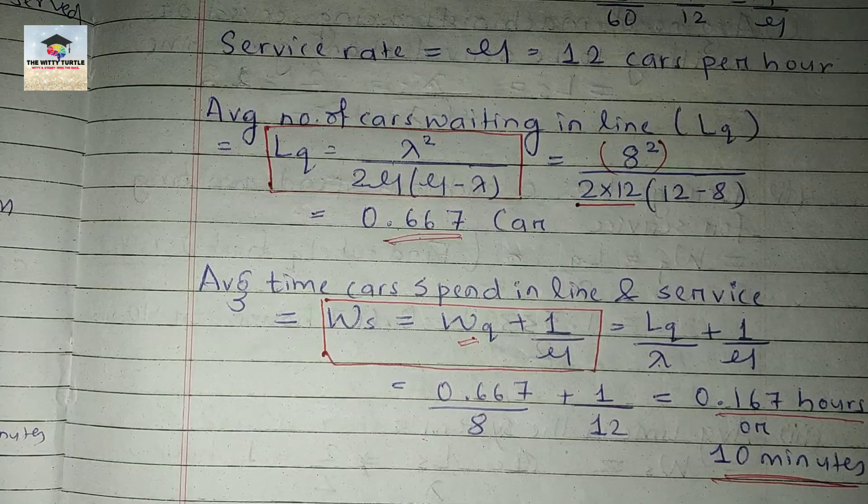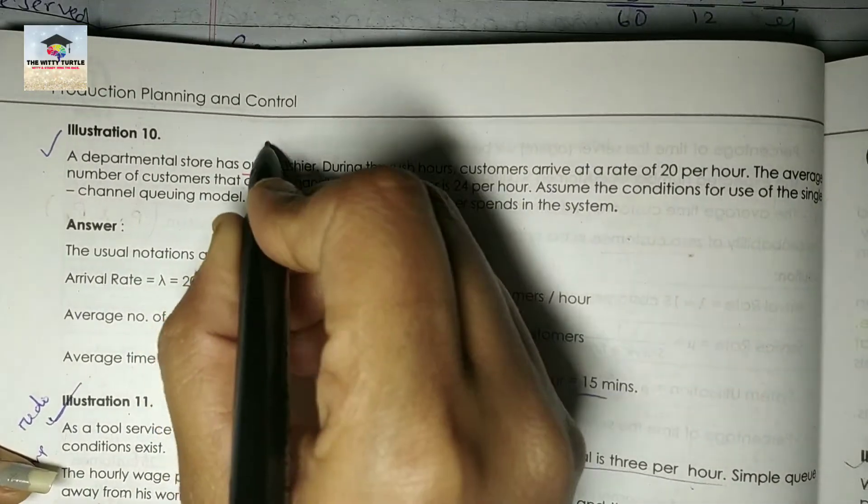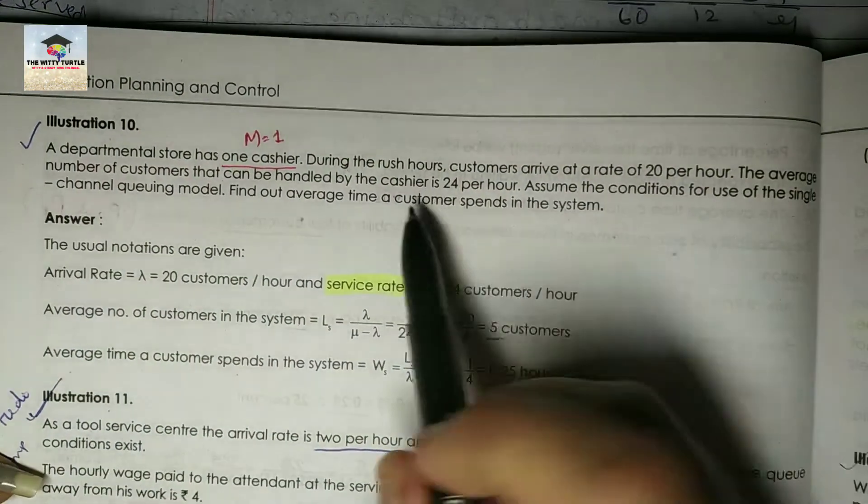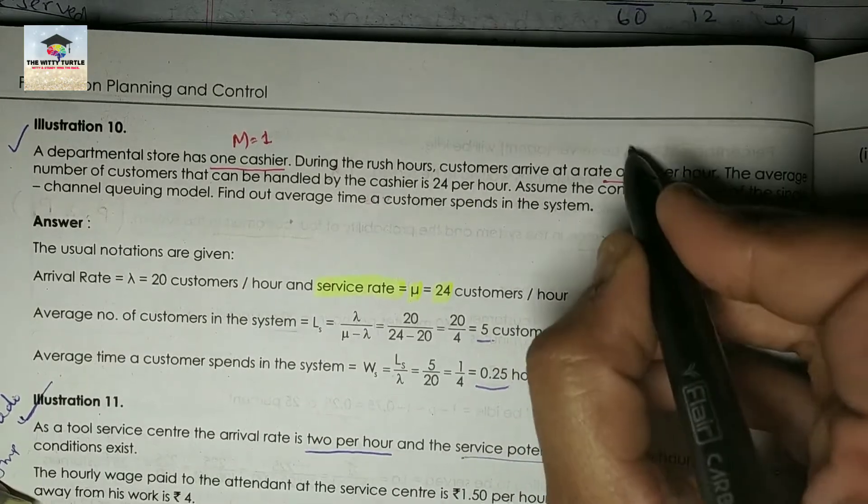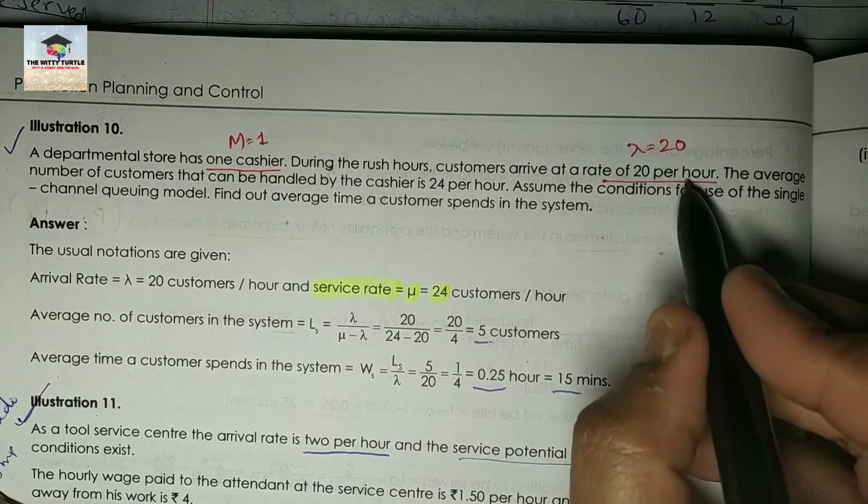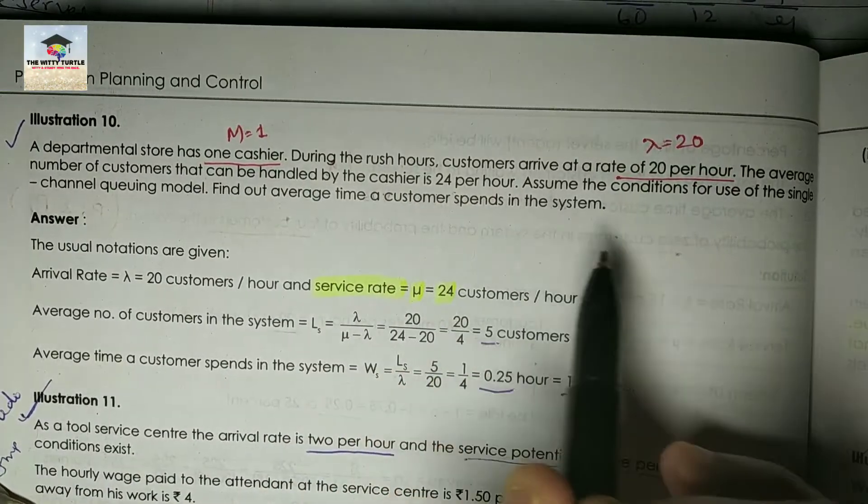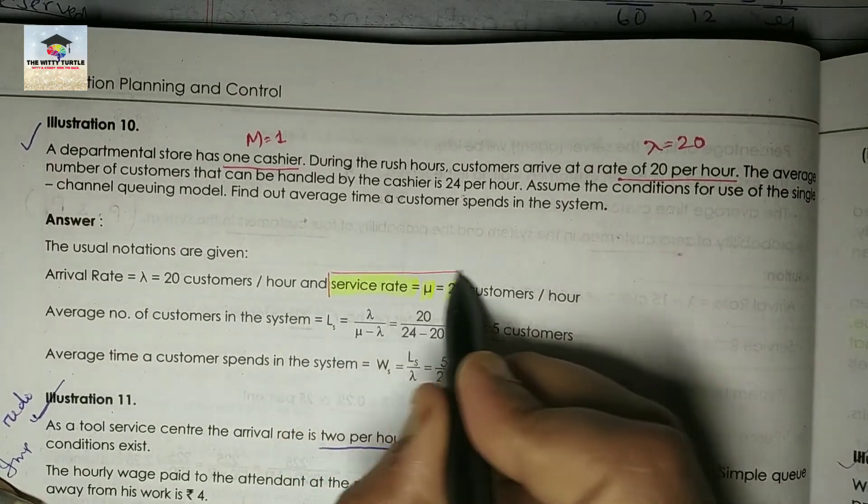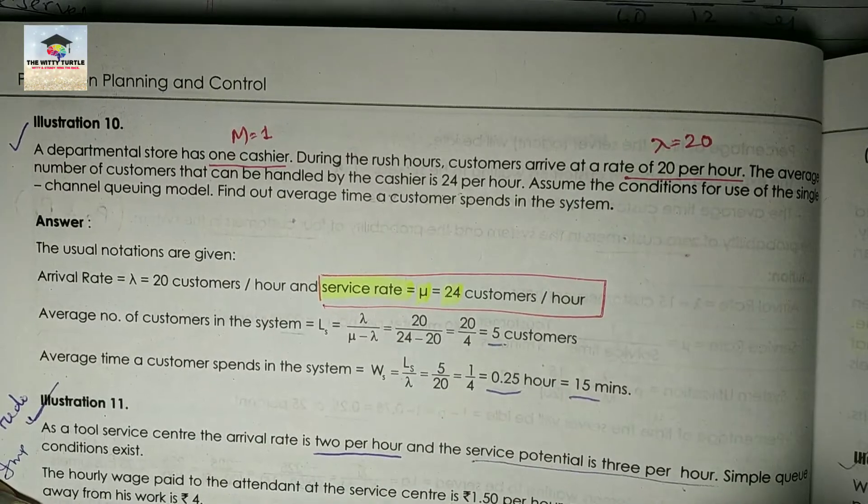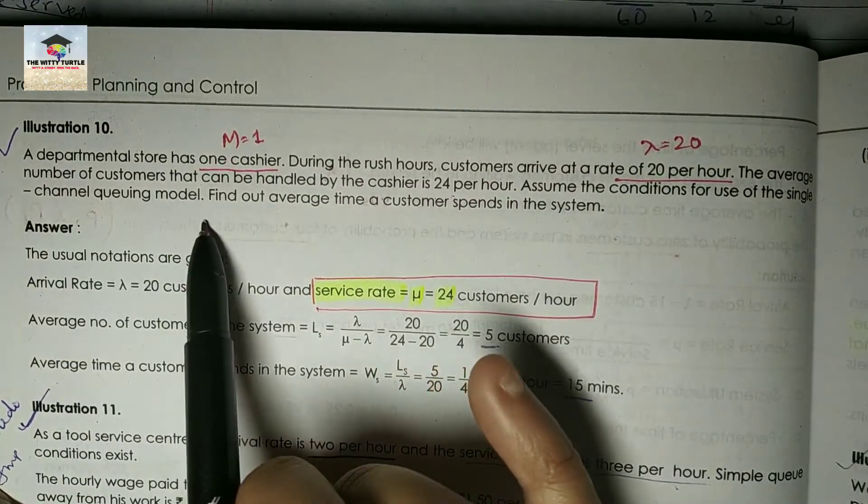Coming to the next question, that is illustration number 10. The question says a departmental store has one cashier. Obviously it has one cashier, that means your m is 1, your number of servers is 1. During the rush hours customers arrive at a rate of 20 per hour—that means your lambda is 20 per hour. The average number of customers that can be handled by the cashier is 24 per hour. So the cashier can handle how many customers per hour? 24 customers per hour. So obviously ye directly aapko service rate yaha per de diya hai—mu equals to 24 customers per hour. Now assume the conditions for use of the single channel queuing model are satisfied.